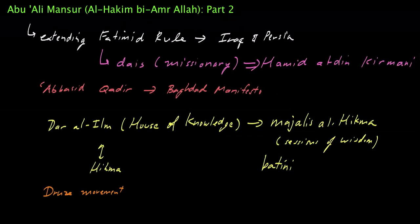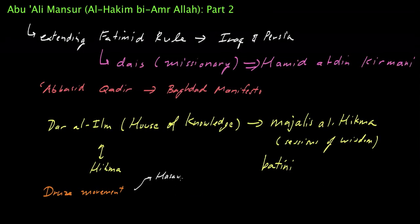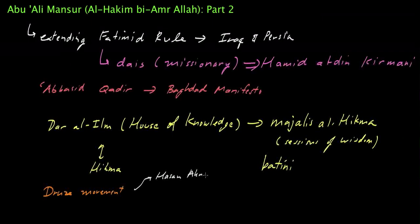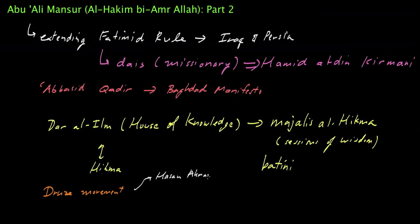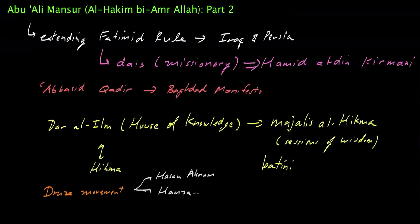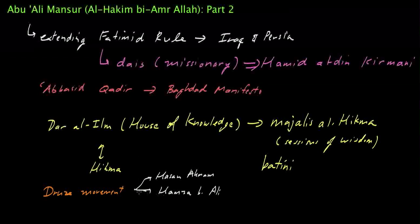And that status actually was an outcrop of doctrines that were propagated by Ismaili dais. And the Ismaili dais included people like Hassan Akhram. Hassan Akhram. And, Hamza bin Ali. Hamza bin Ali. And finally, also Muhammad Darzi.